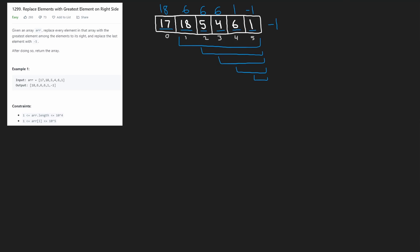Once you draw it out, it's pretty easy to recognize the repeated work we're doing. Because of this repeated work, this solution runs in O(n²) time. It's also obvious that since we're doing a lot of repeated work, there is a better solution. So let's analyze it to find a pattern we can use to make it more efficient.